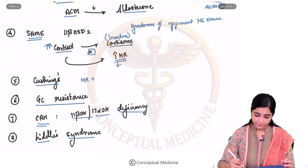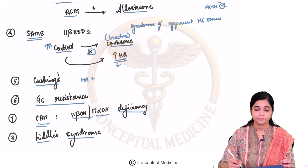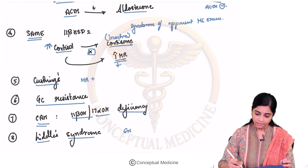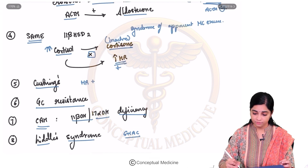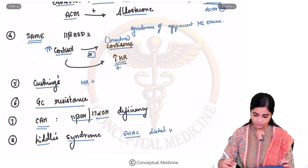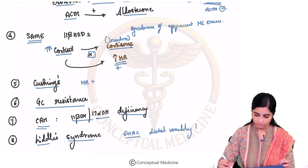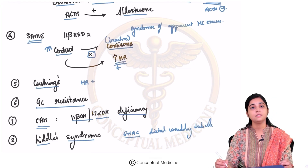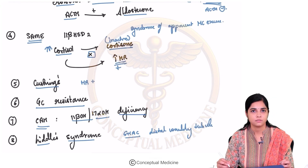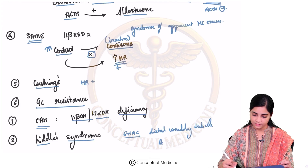In Liddle syndrome, there is a mutation in the epithelial sodium ion channel — ENaC — which is present in the distal convoluted tubule. ENaC mutations result in Liddle syndrome. The treatment is by giving ENaC channel inhibitors like amiloride.